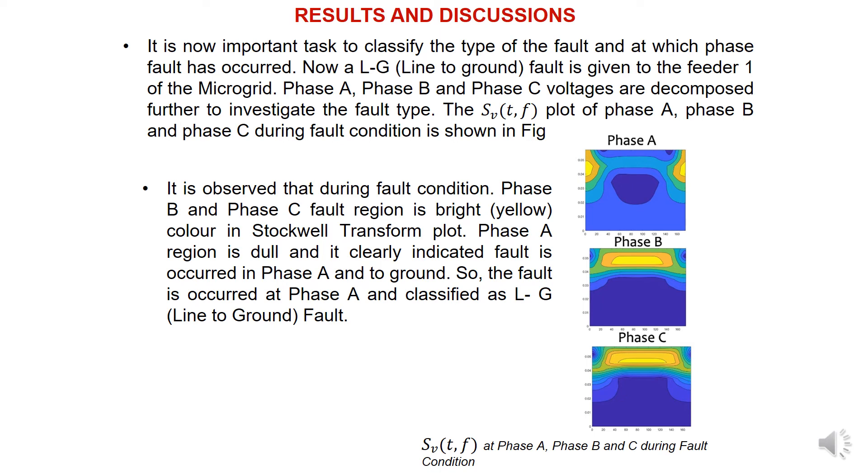Phase A, Phase B, and Phase C voltages are decomposed further to investigate the fault type. We are obtaining time-frequency plots from the Stockwell transform for all three phases during fault condition. It is observed that during the fault condition, Phase B and Phase C fault regions are bright, whereas Phase A region is very dull, clearly indicating that fault occurred in Phase A.